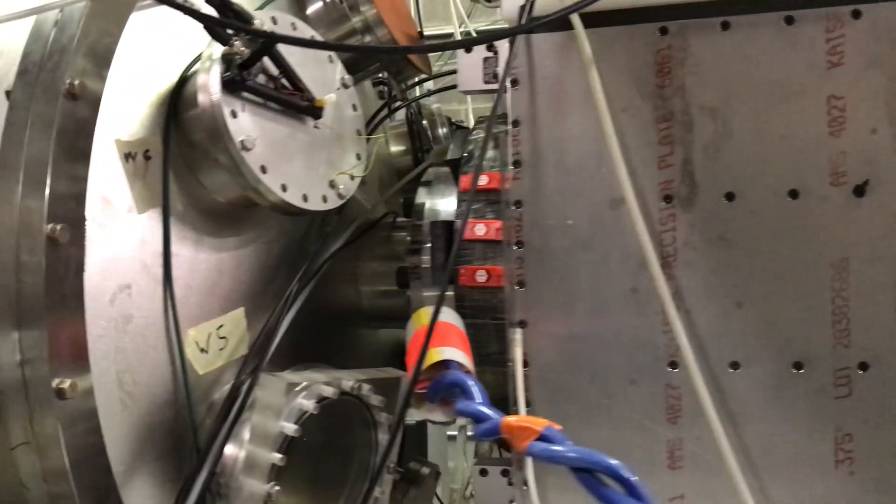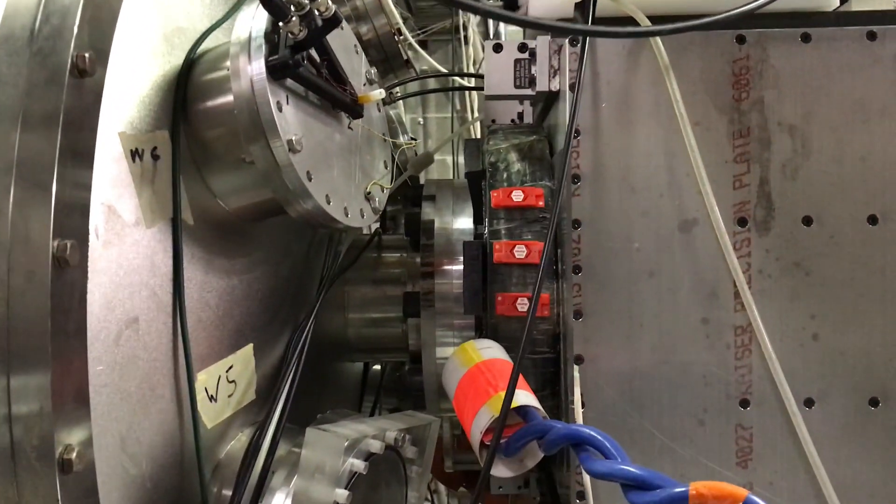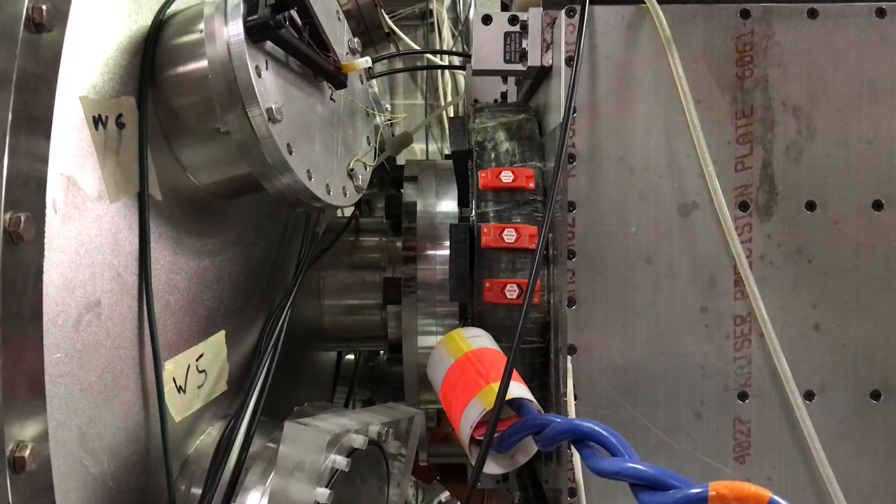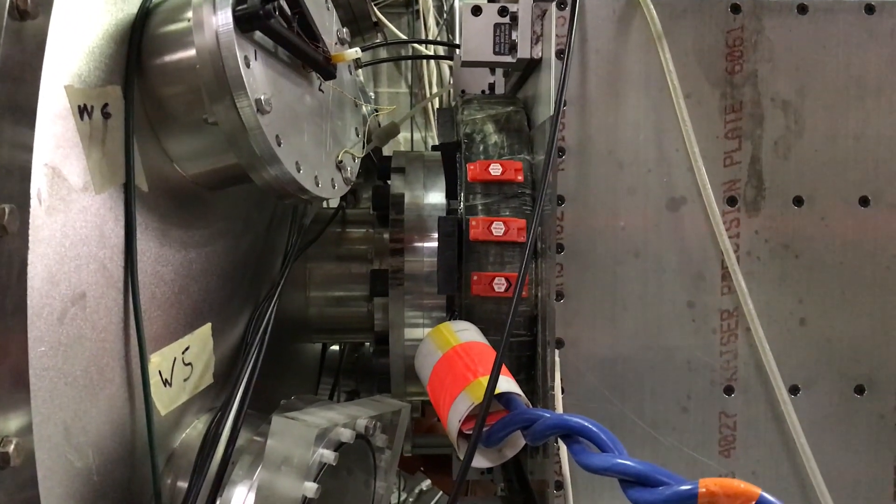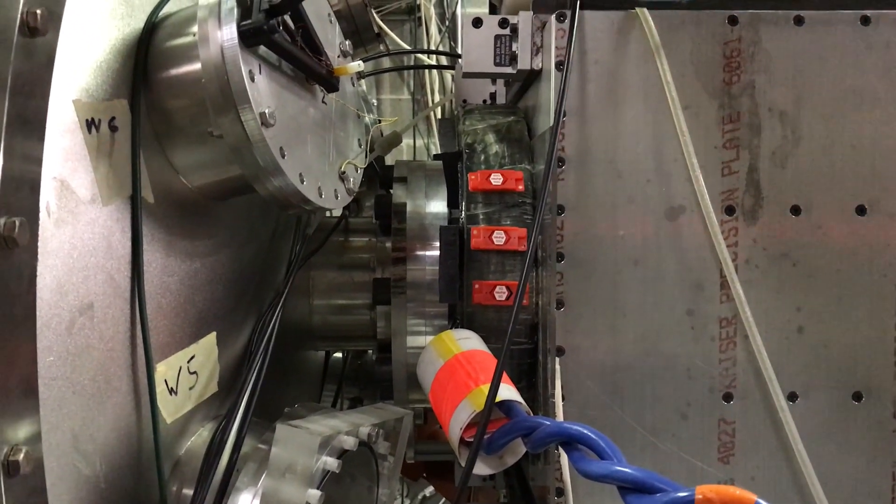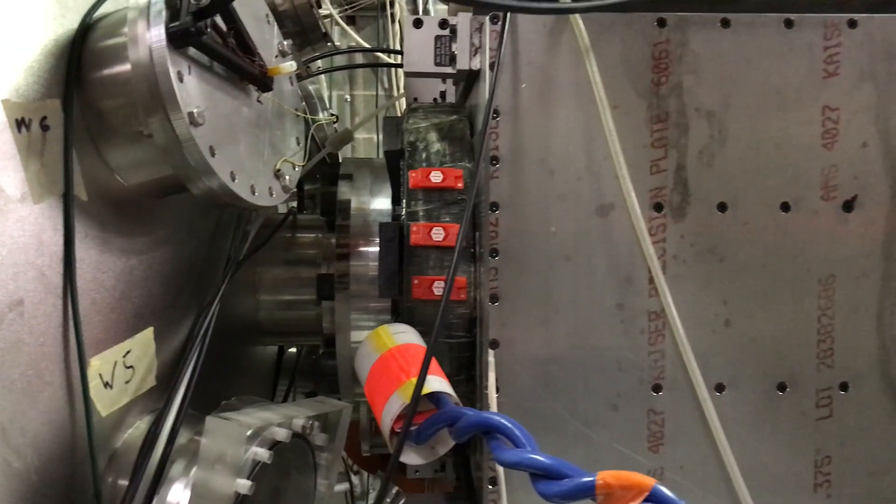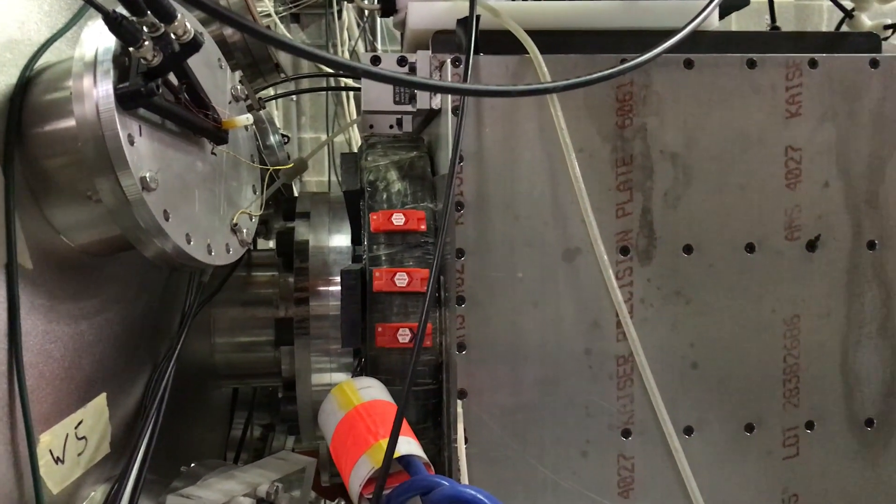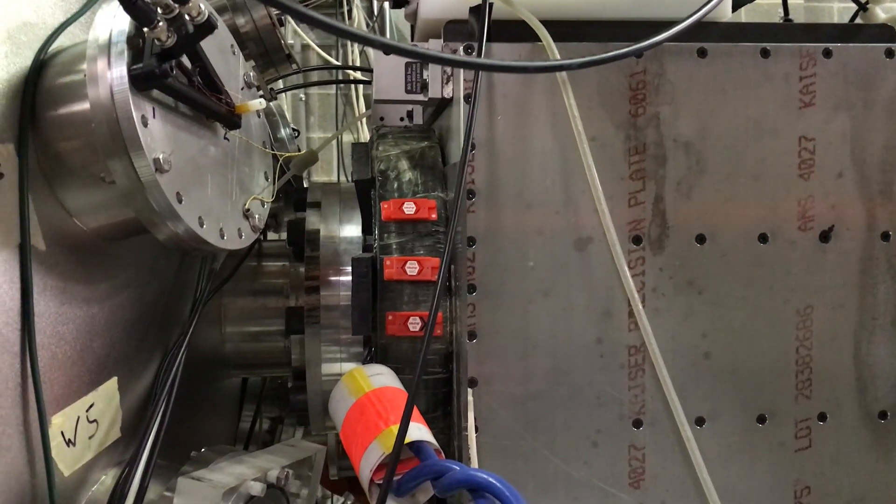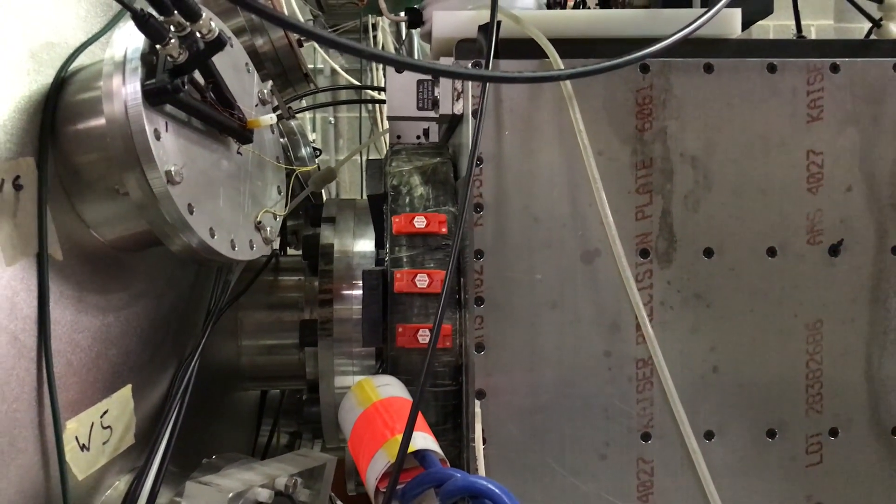You can see over here where the plasma gun attaches to the vacuum tank. That's where the inner and outer electrode of the plasma gun is located, and then there are three red clips that are on an electromagnetic field coil.